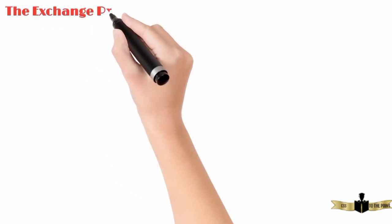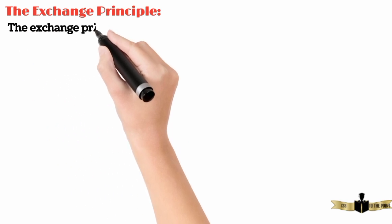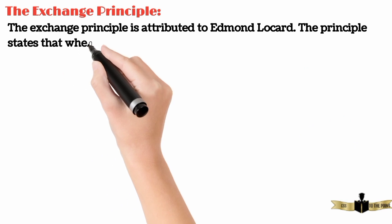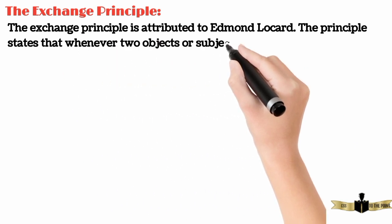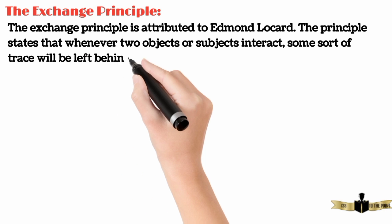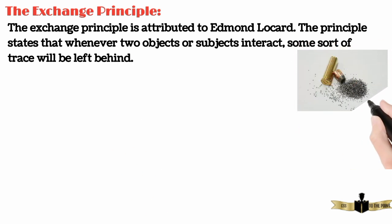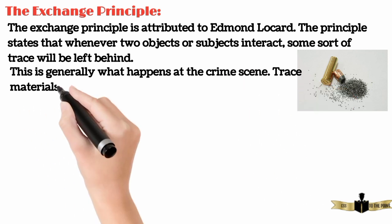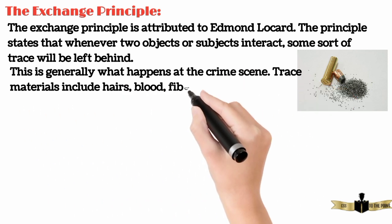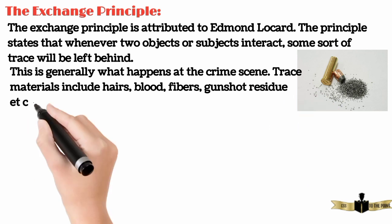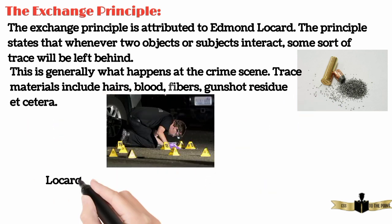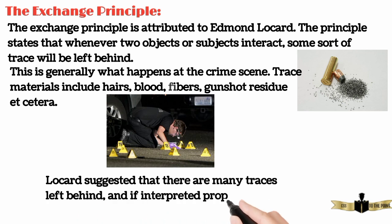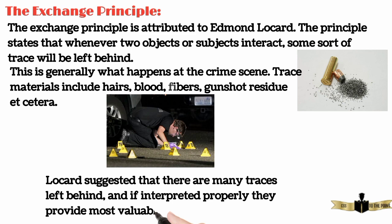Second, the Exchange Principle. The Exchange Principle is attributed to Edmund Lockard. The principle states that whenever two objects or subjects interact, some sort of trace will be left behind. This is generally what happens at the crime scene. Trace materials include hairs, blood, fibres, gunshot residue, etc. Lockard suggested that there are many traces left behind, and if interpreted properly, they provide most valuable information.